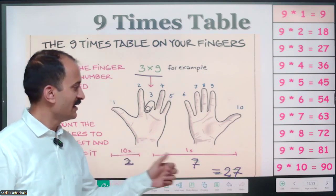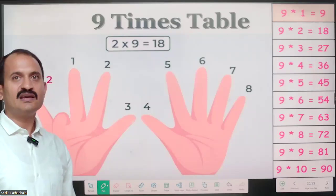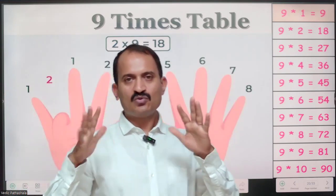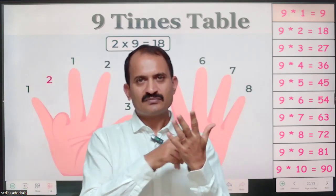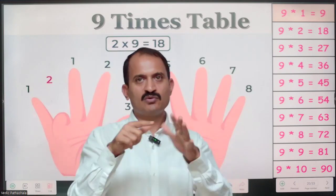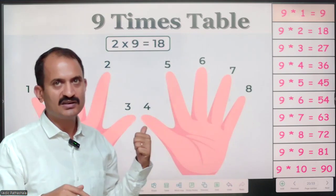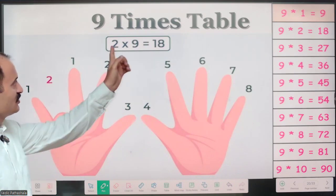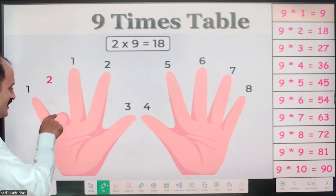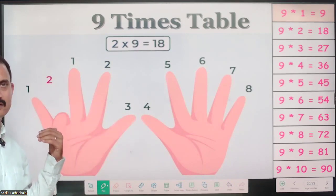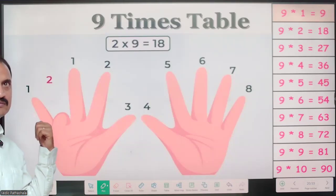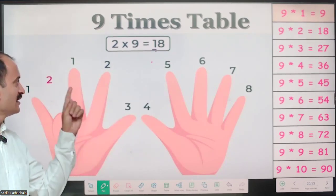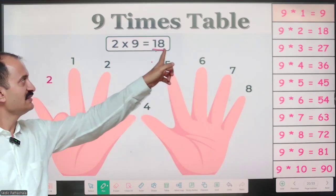Here is one more example. The palm can be held facing the other way — it is your choice. Whatever way you hold, just start from the left extreme. In this figure, the person has held palms down, starting with the little finger. To find 2 times 9, fold the second finger. How many fingers to the left? Only 1, so the tens digit is 1. How many to the right? 1, 2, 3, 4, 5, 6, 7, 8 — that's 8. So the answer is 18.